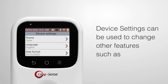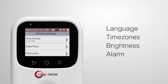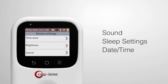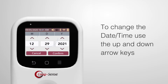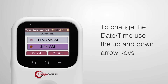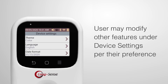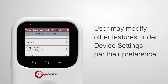Device settings can be used to change other features such as language, time zones, brightness, alarm, sound, sleep settings, and date and time. To change the date or time, use the up and down arrow keys to set the appropriate month, day, year, or hour, minutes, a.m./p.m., then confirm. Users may modify other features under device settings per their preference.